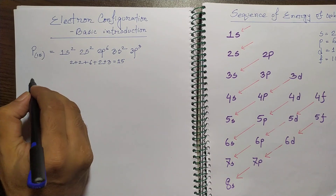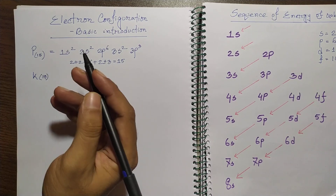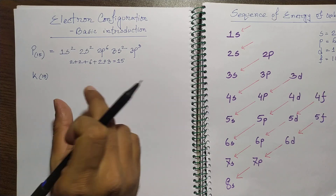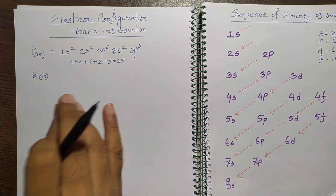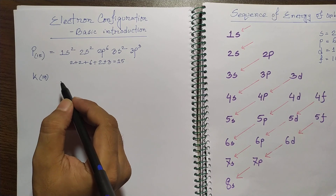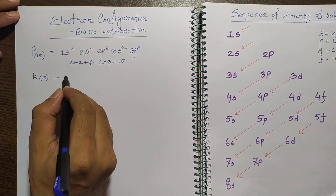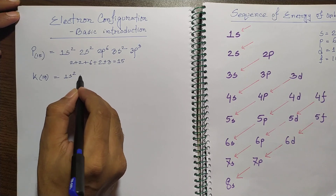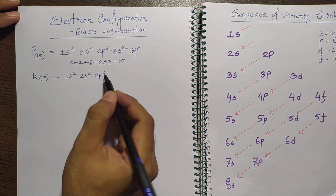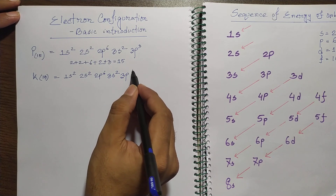Now think about potassium, which has atomic number 19. You must know the periodic table — the atomic number is given for each individual element. So potassium is 19, and according to the orbital energy sequences we can write: 1s2, 2s2, 2p6, 3s2, 3p6.